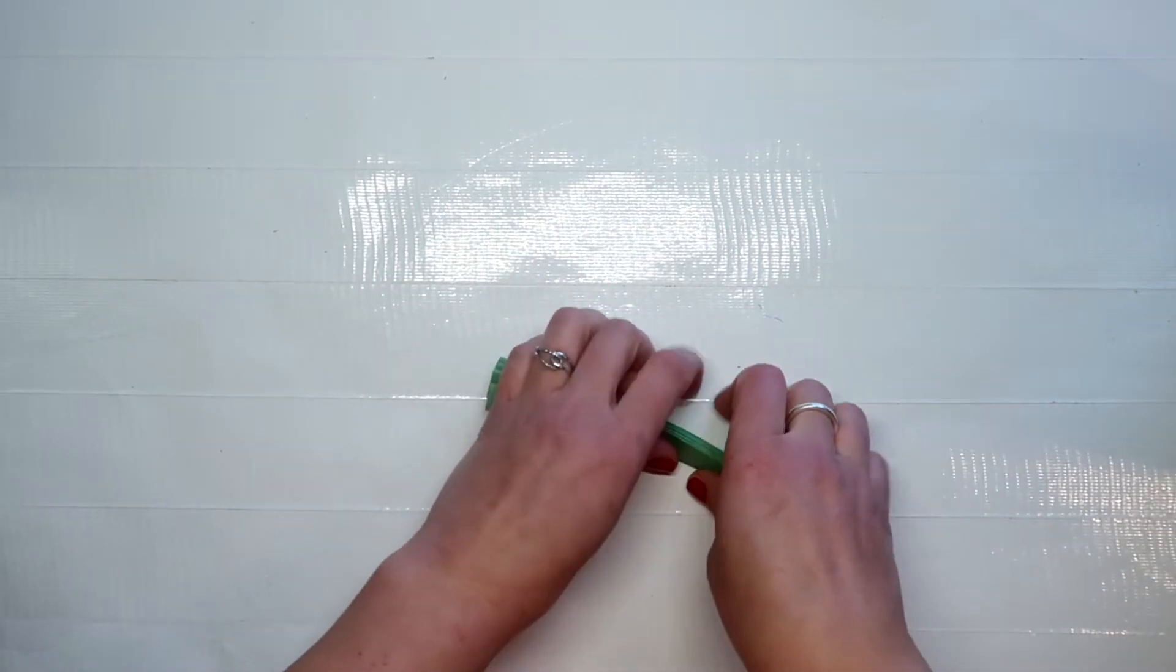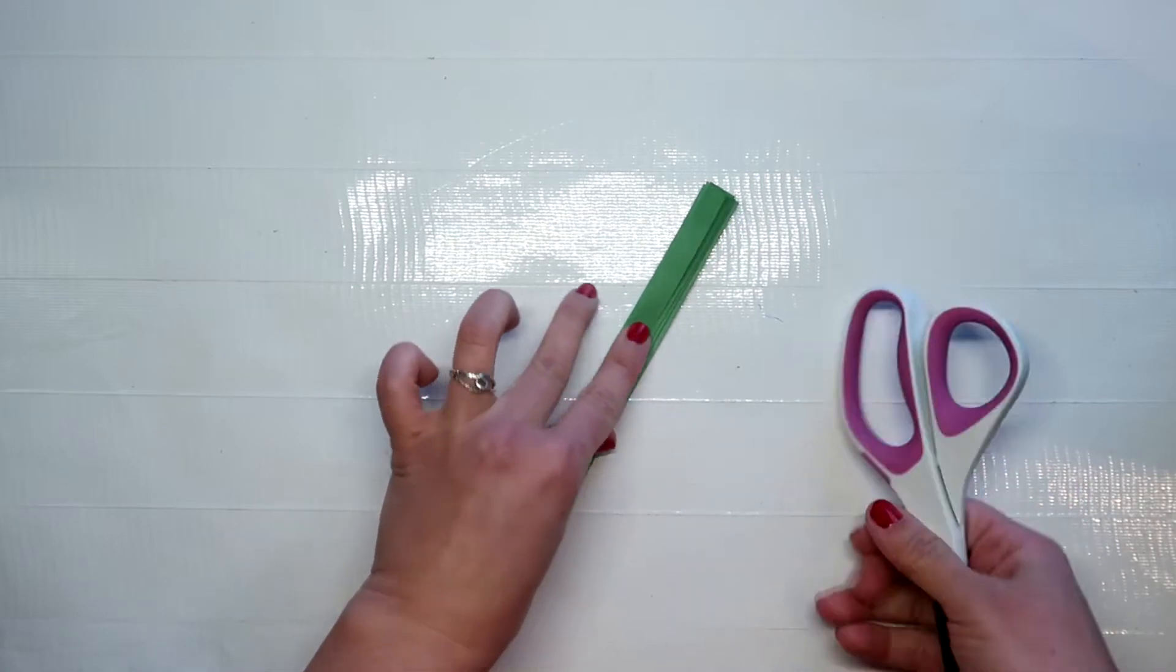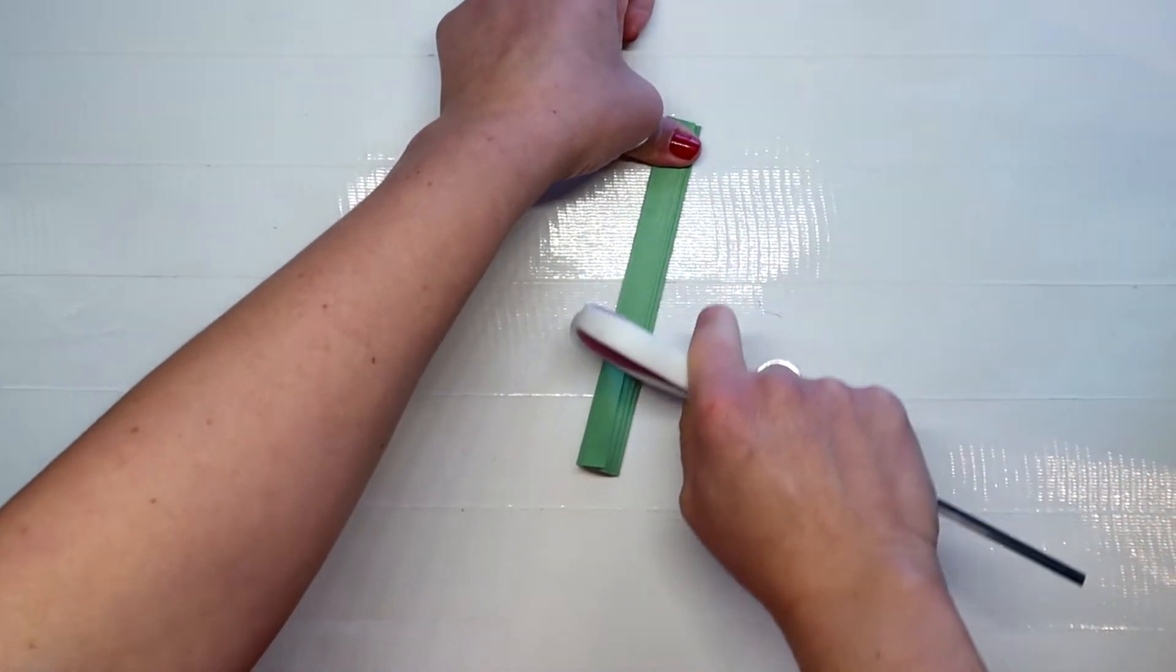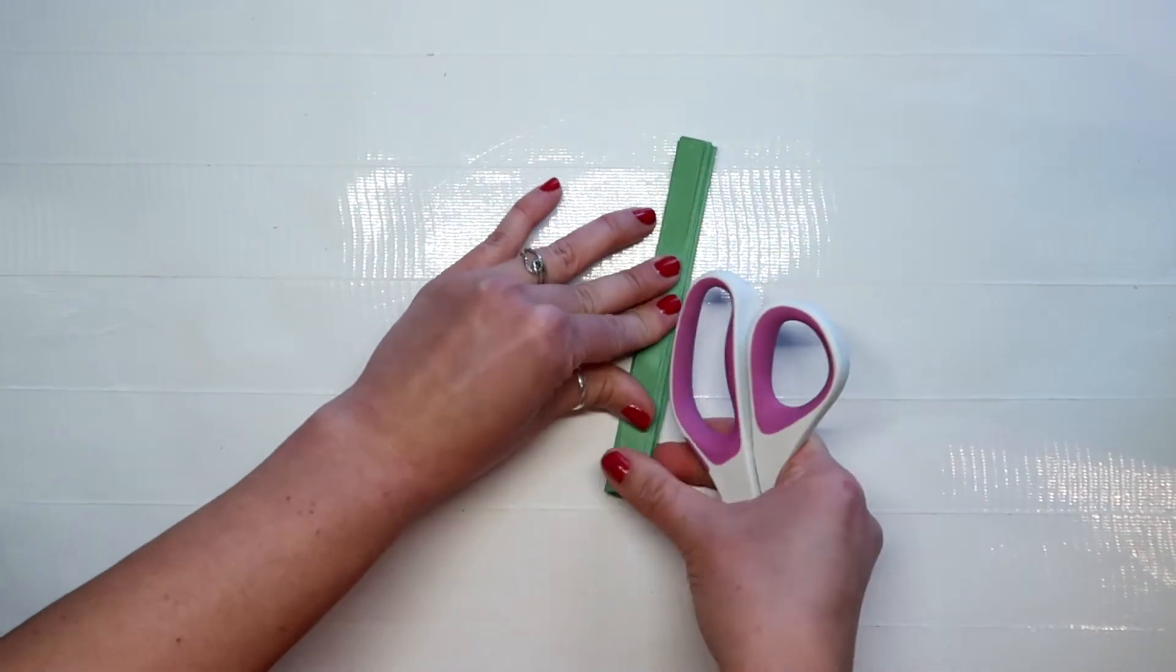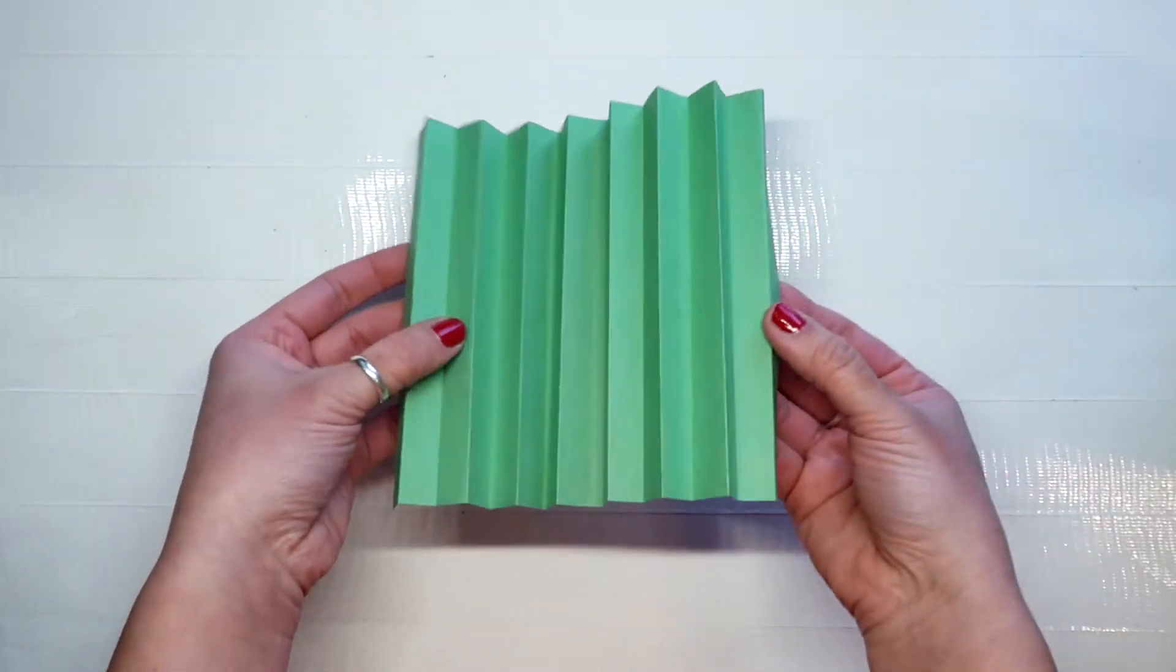Now it doesn't matter if it's not exact. You just want it to be as close as possible. So then I'm just going to take the back of my scissors and I'm just going to make sure it's really creased. And then you've got this like accordion style.